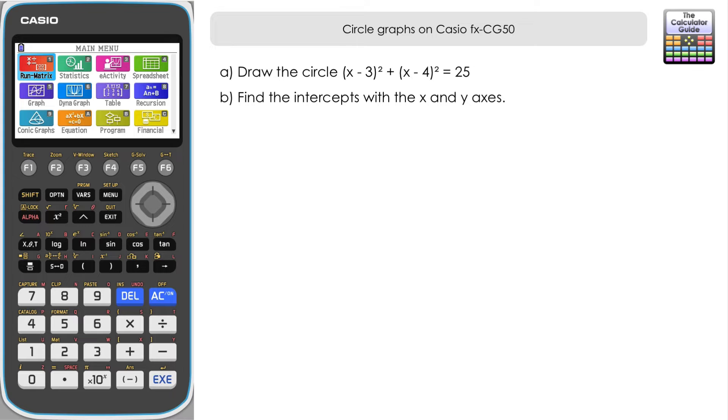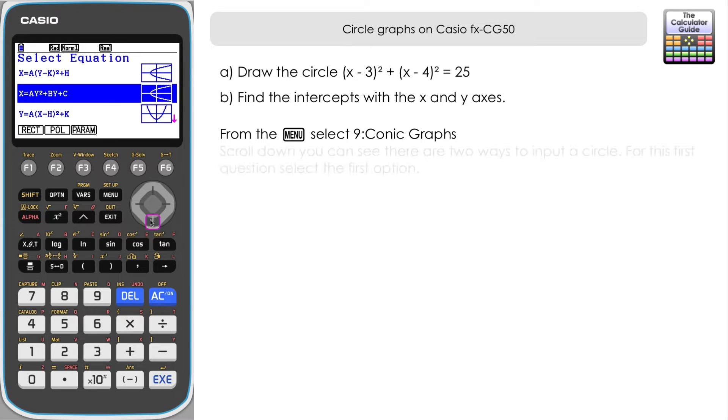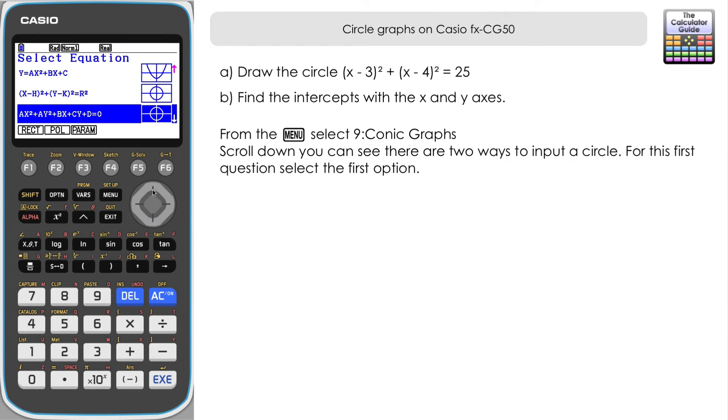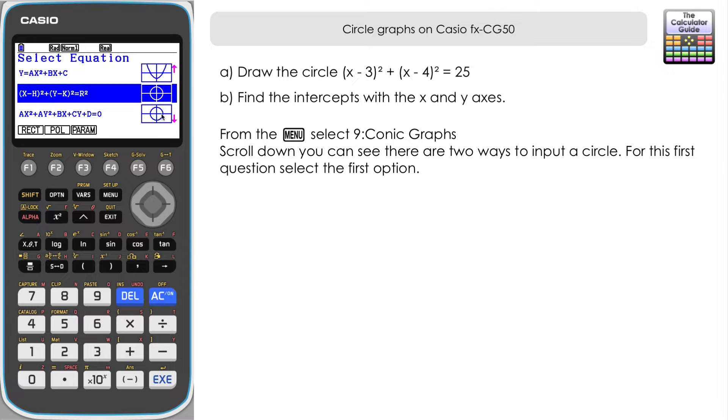To draw a circle what we need to do is to select conic graphs or option 9 from the main menu and then scroll down and you can see that there's two options here for drawing a circle, two different ways in which you can input it.